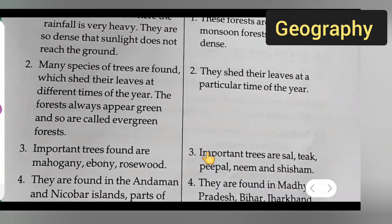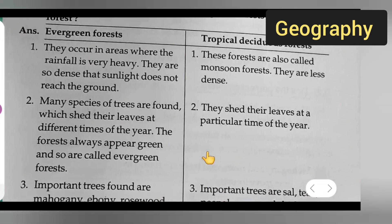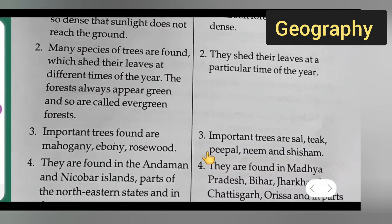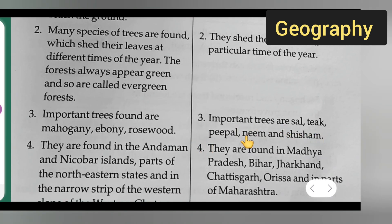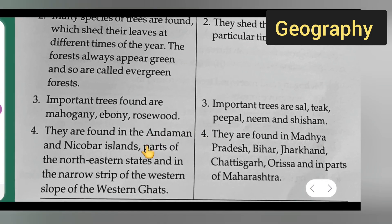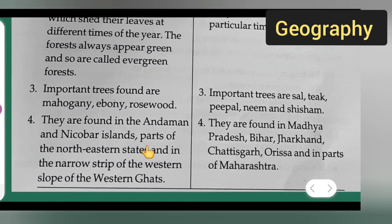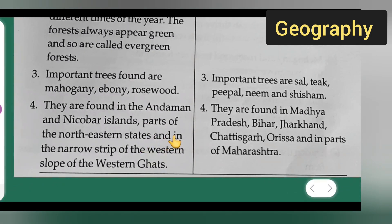Third point under evergreen forest: important trees found are Mahogany, Ebony, and Rosewood. Third point under deciduous forest: important trees are Sal, Teak, Peepal, Neem, and Shisham.